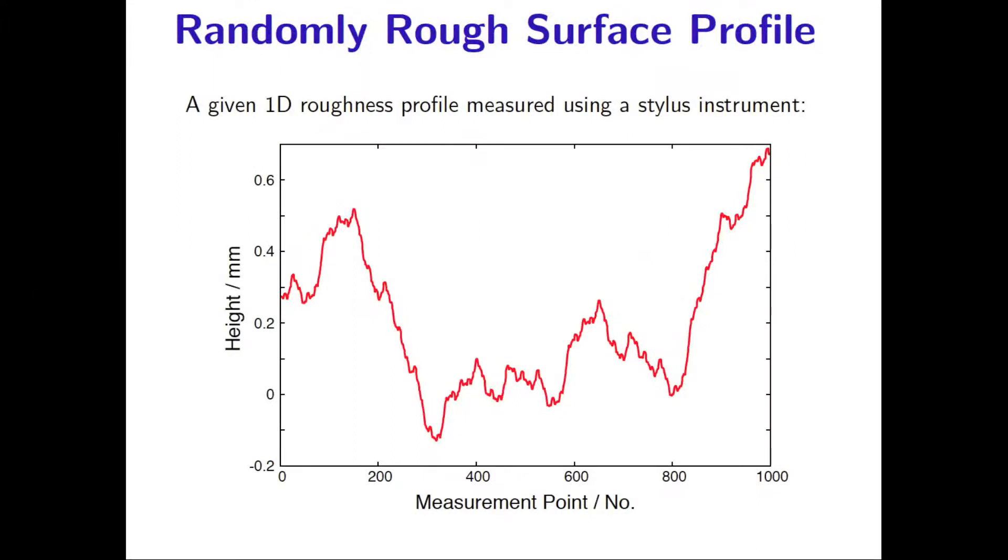Let's say we have measured a randomly rough surface, for example an asphalt road surface, using a stylus instrument. We then usually have obtained information about the height h as a function of coordinate or measurement point. Knowing the lattice constant of the instrument, one can easily convert from measurement point to coordinate by multiplying the point number with the lattice constant. We can see from this measurement that the height change looks chaotic with roughness components on different length scales.